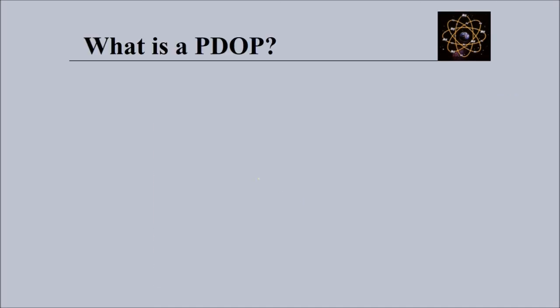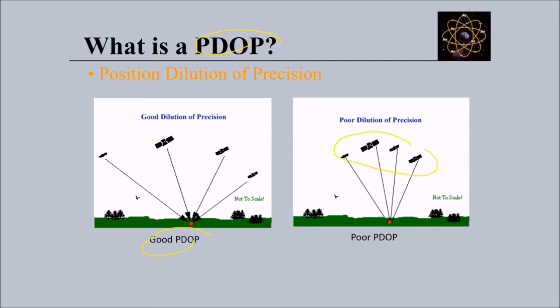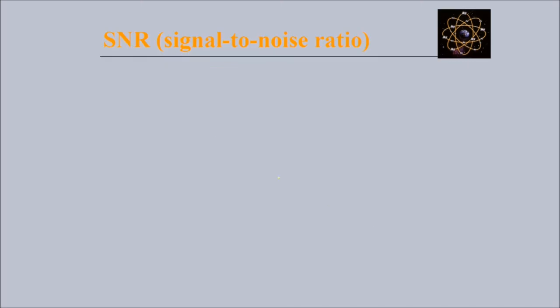What about PDOP - Position Dilution of Precision? When GPS satellites are well distributed, we say we get good PDOP. But if they are staggered together or not located differently, then the PDOP is considered to be poor.